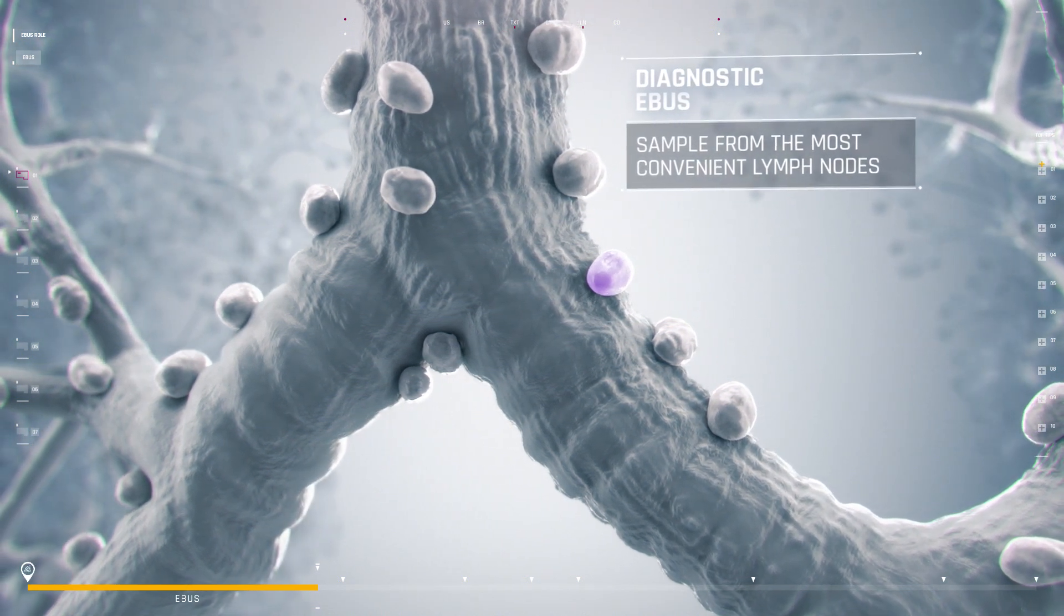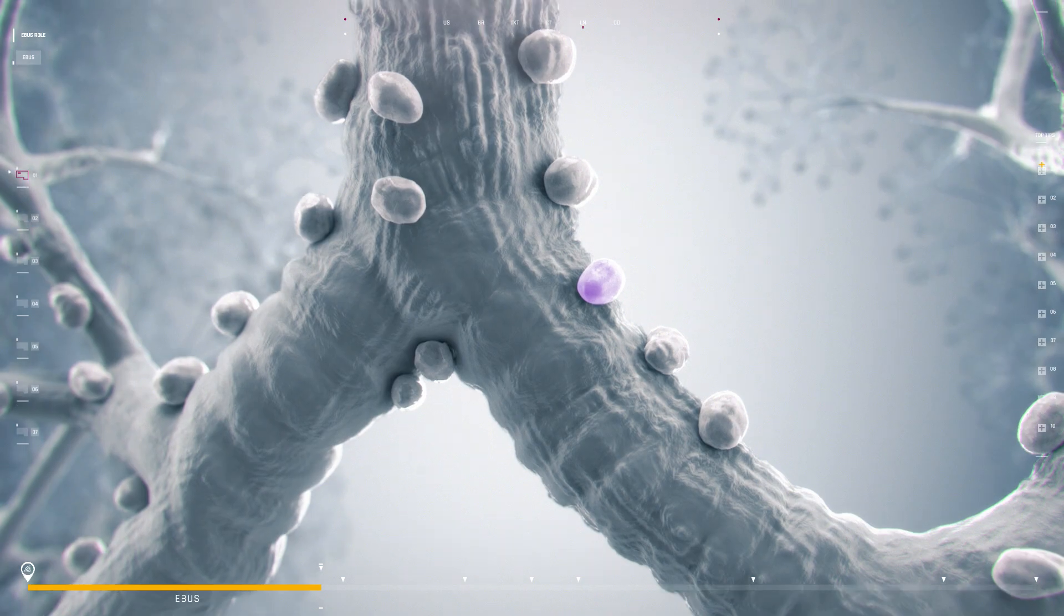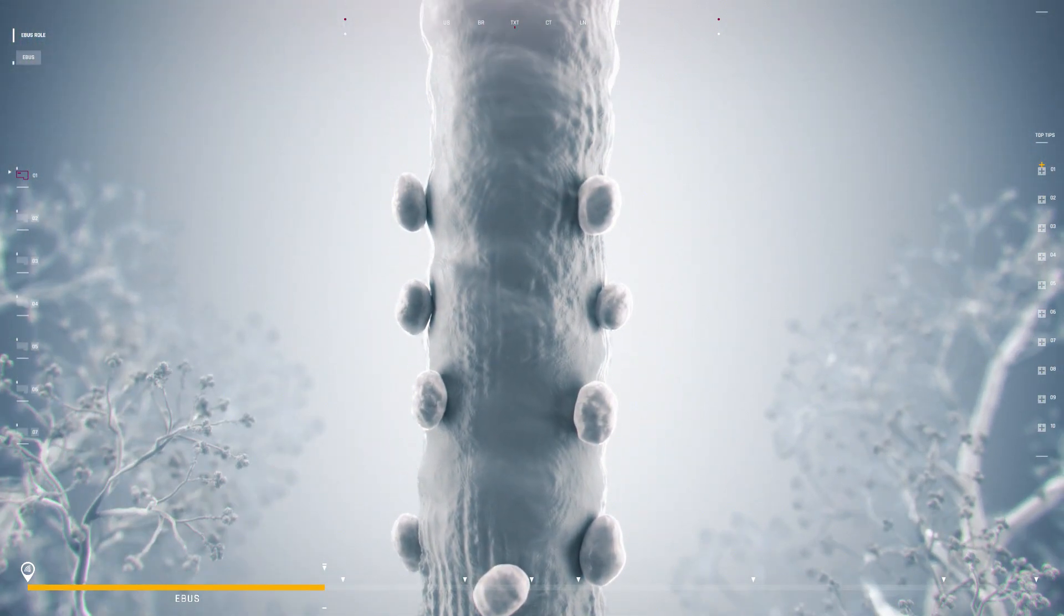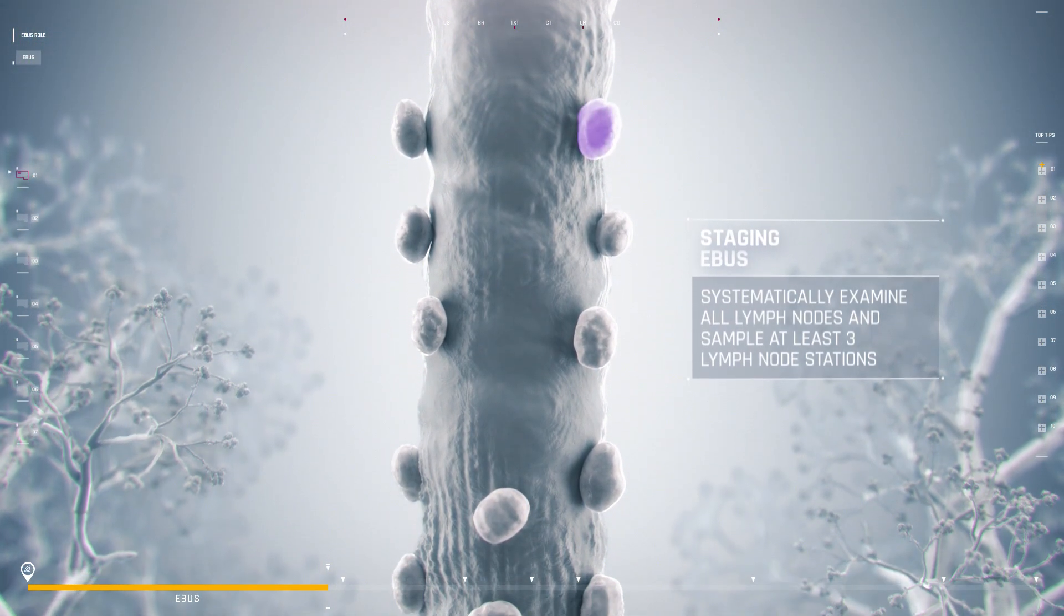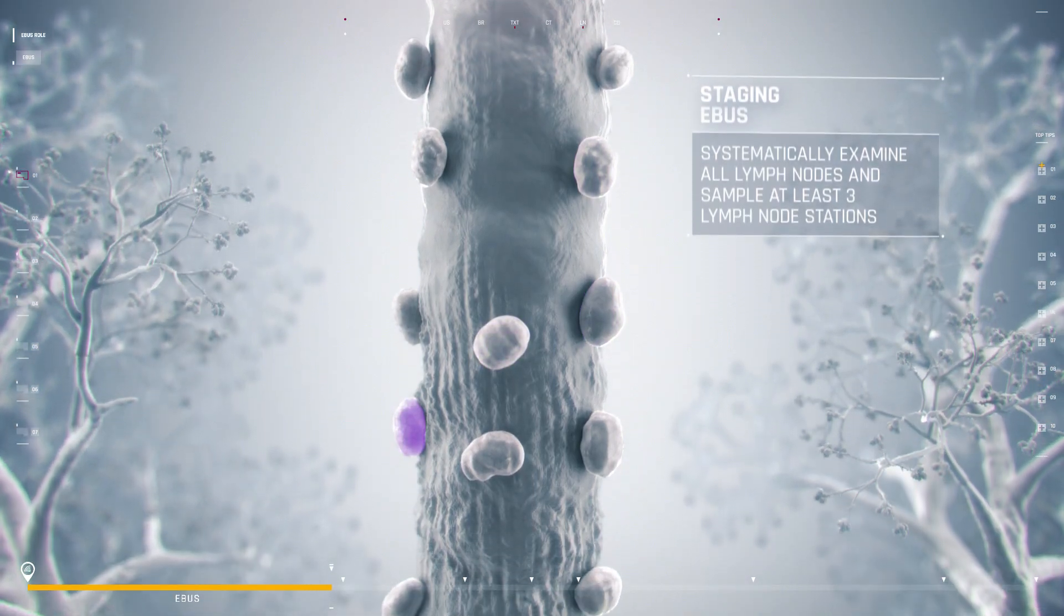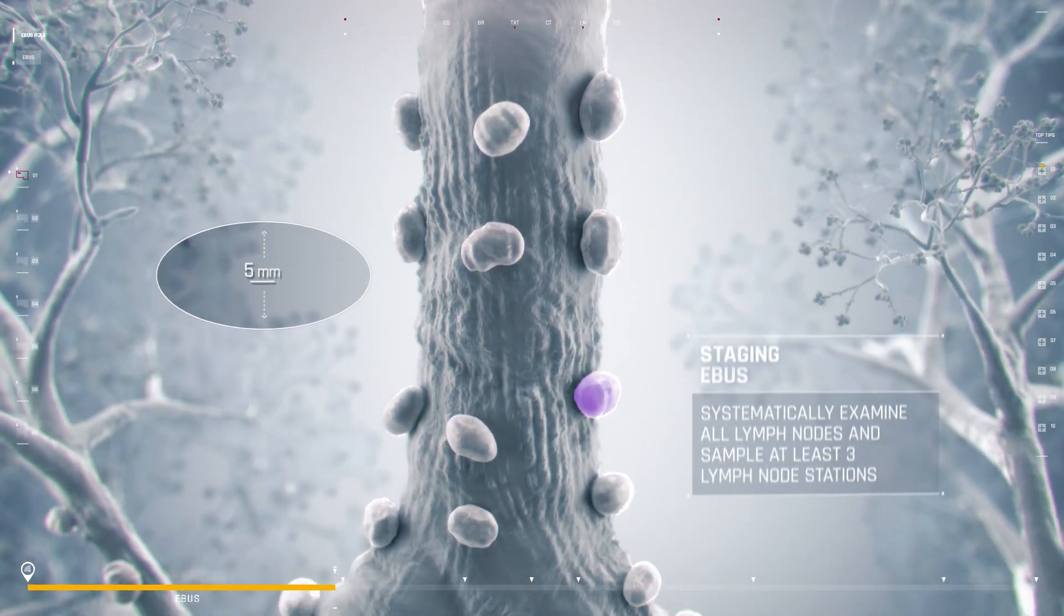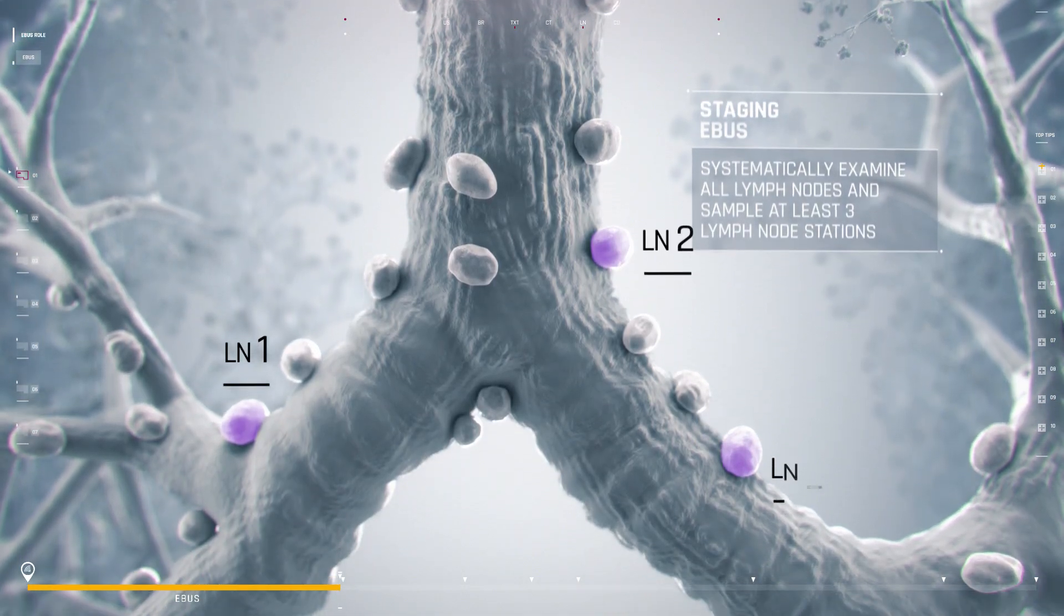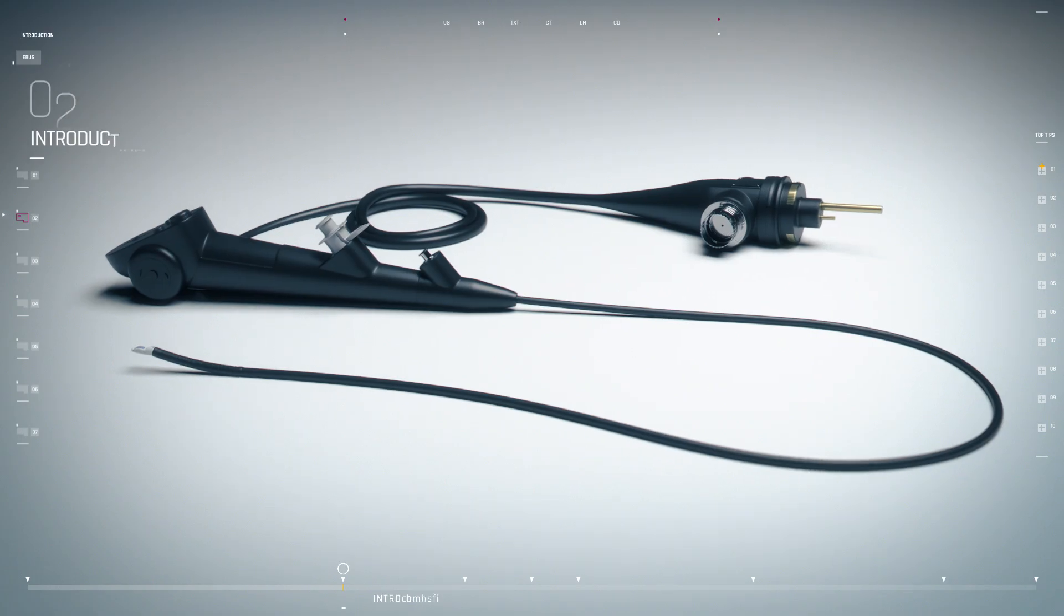For a staging EBUS procedure, lymph nodes are systematically examined by EBUS, and all nodes greater than five millimeters in short axis are sampled. There should be at least three lymph nodes sampled.